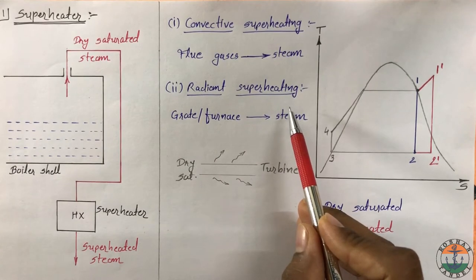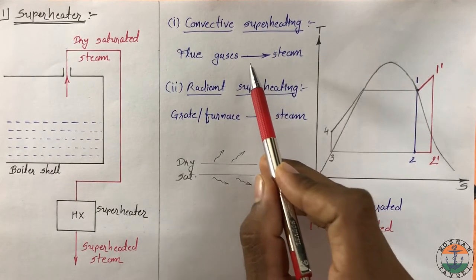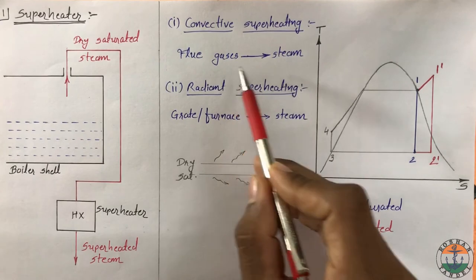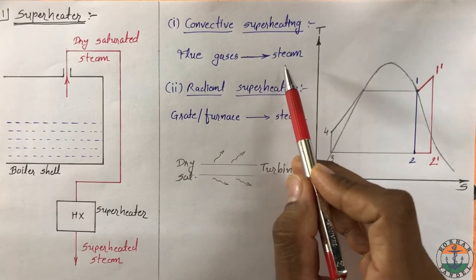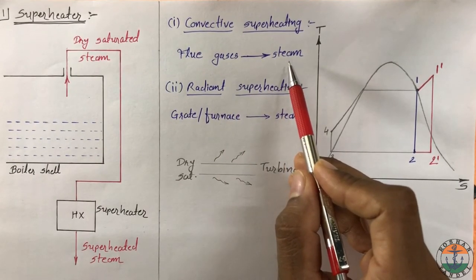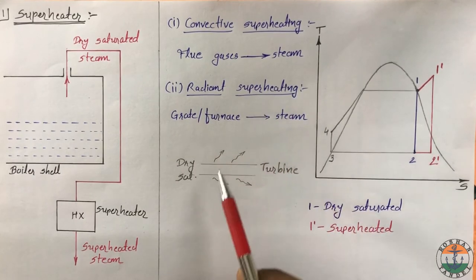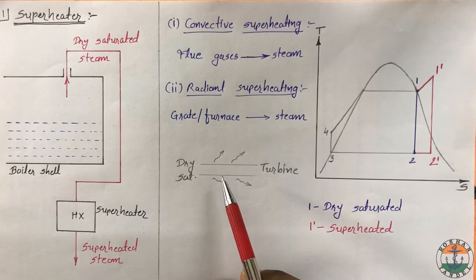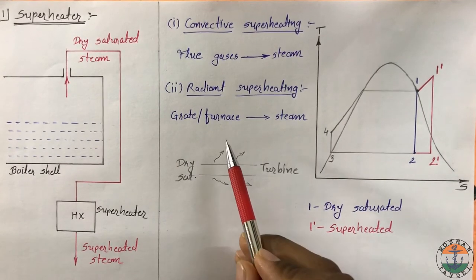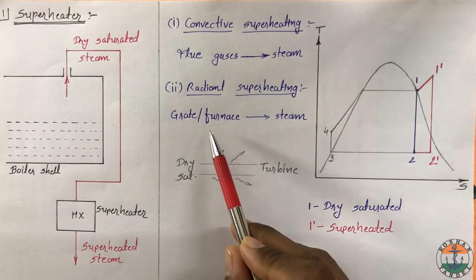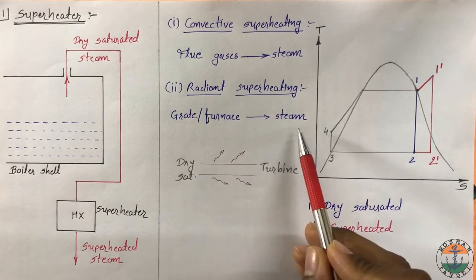In convective superheating, heat is transferred from flue gases to the steam to convert it into superheated steam. Whereas in radiant superheating, steam is passed just above the furnace or grate and heat transfer takes place by radiation to the steam.